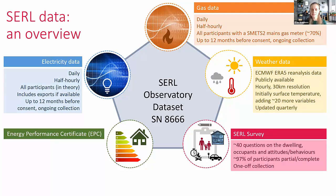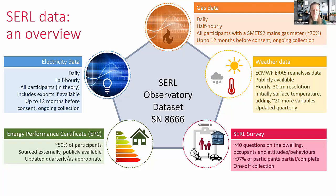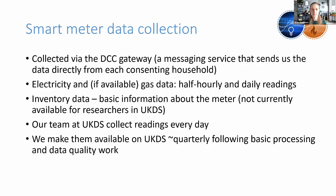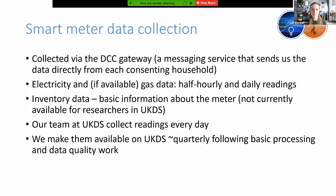When people sign up to CERL, we optionally ask them to fill in a survey of about 40 questions about the dwelling, their household, and their attitudes and behaviours. Pretty much everybody at least starts the survey and most complete it; it's a one-off collection. Finally, Energy Performance Certificates: about half of homes in the UK have an EPC. We source that externally — it's publicly available — and we link all of these data sets together. We also get inventory data about the meter itself, though that's not currently available for researchers through UKDS but is something potentially for the future.